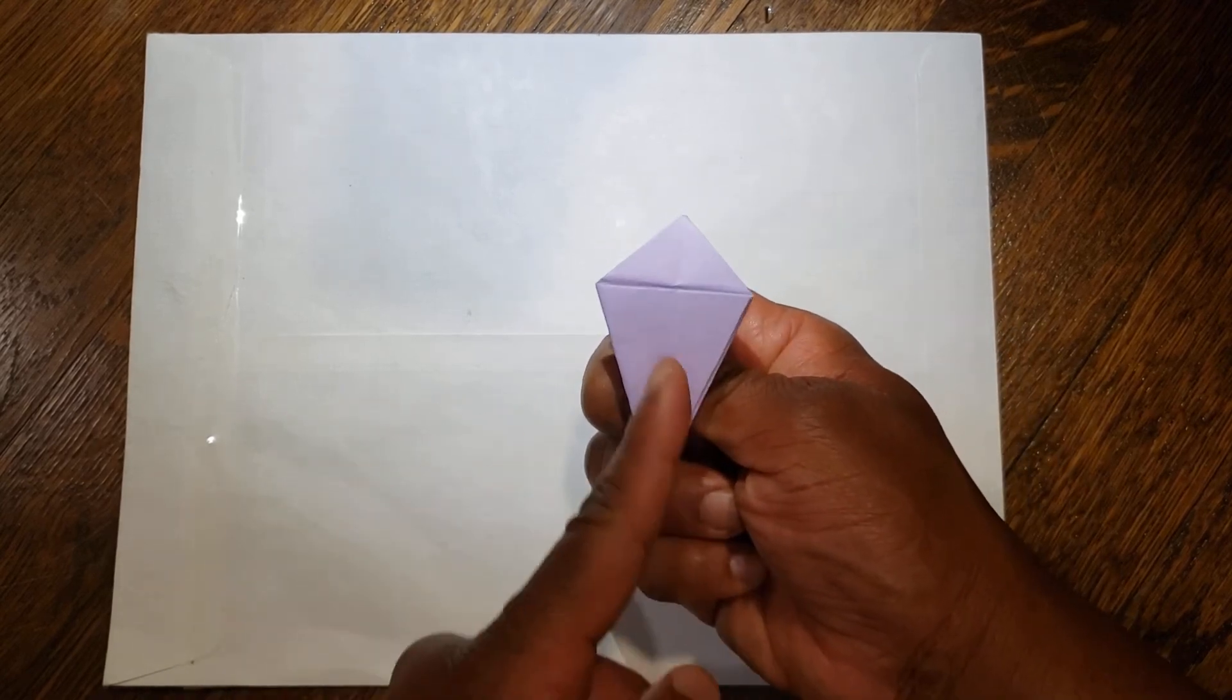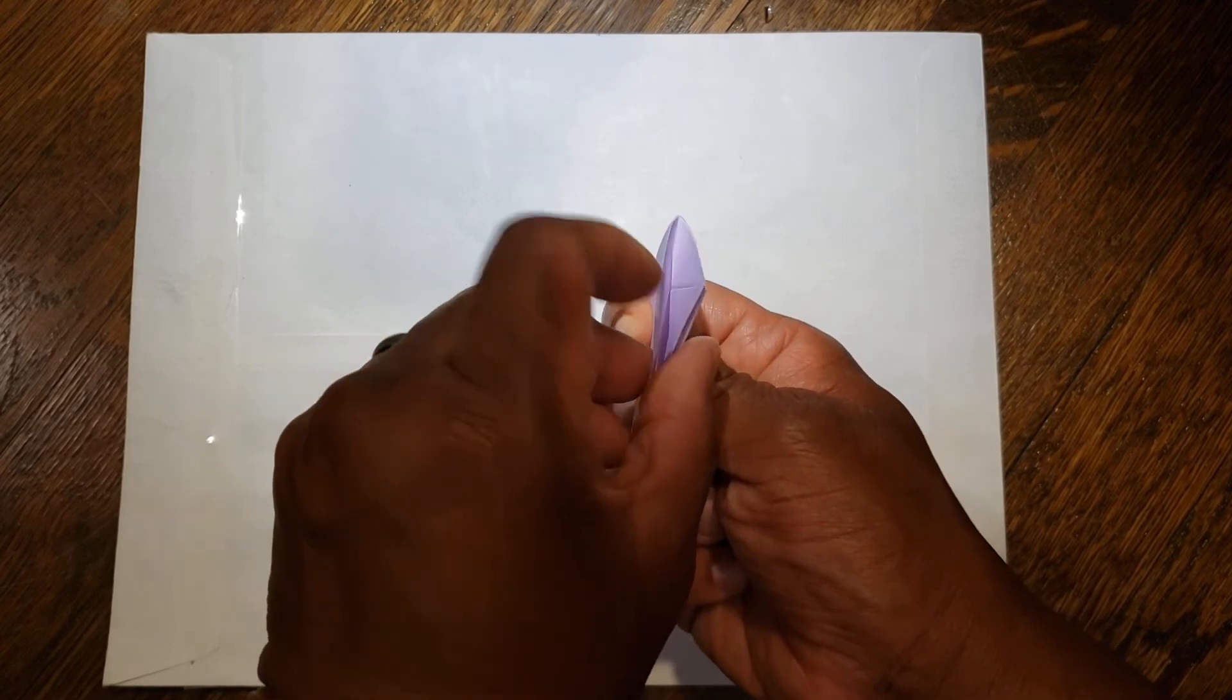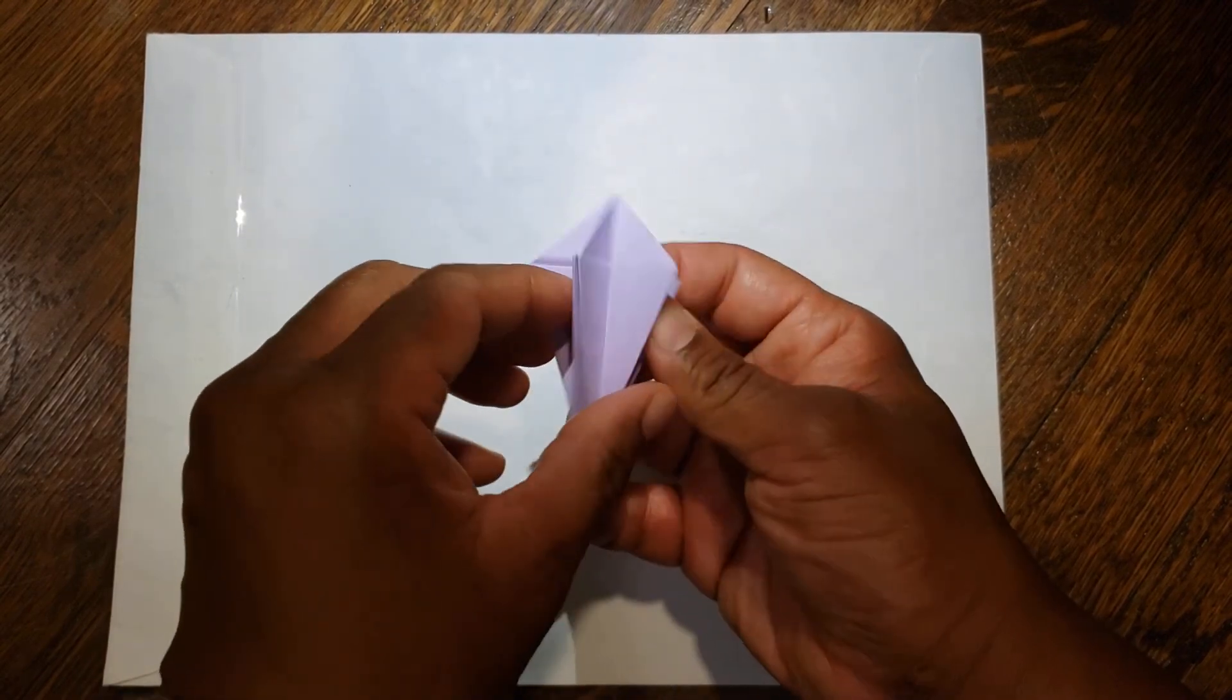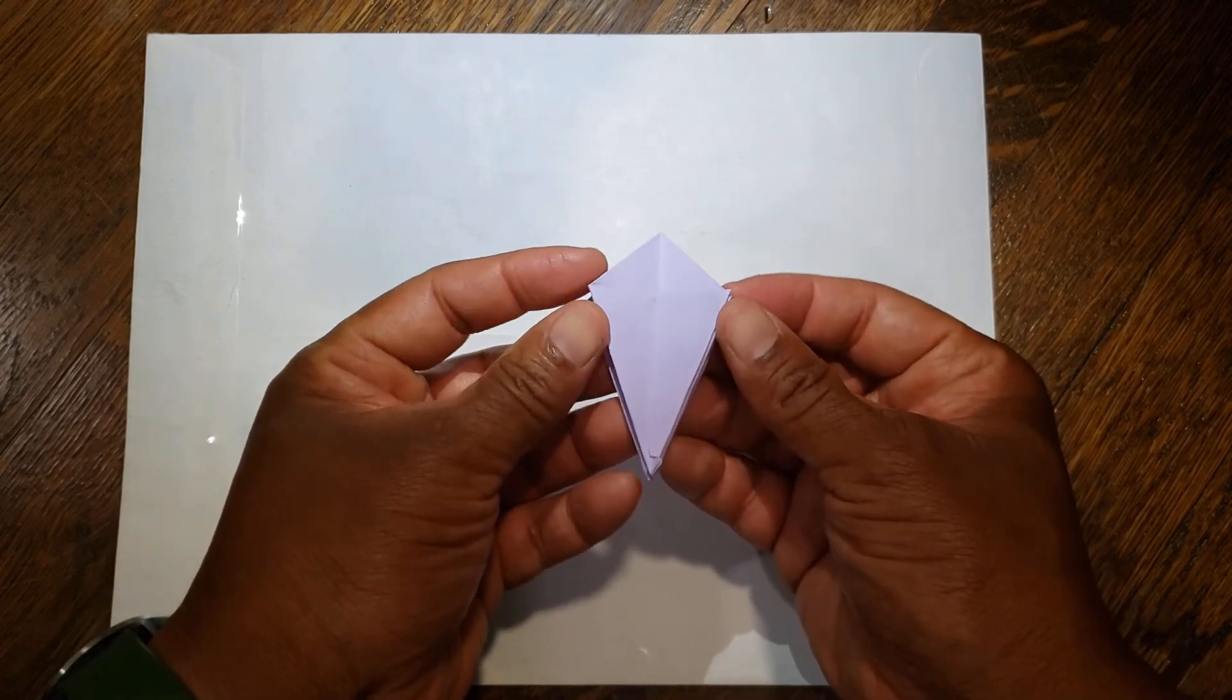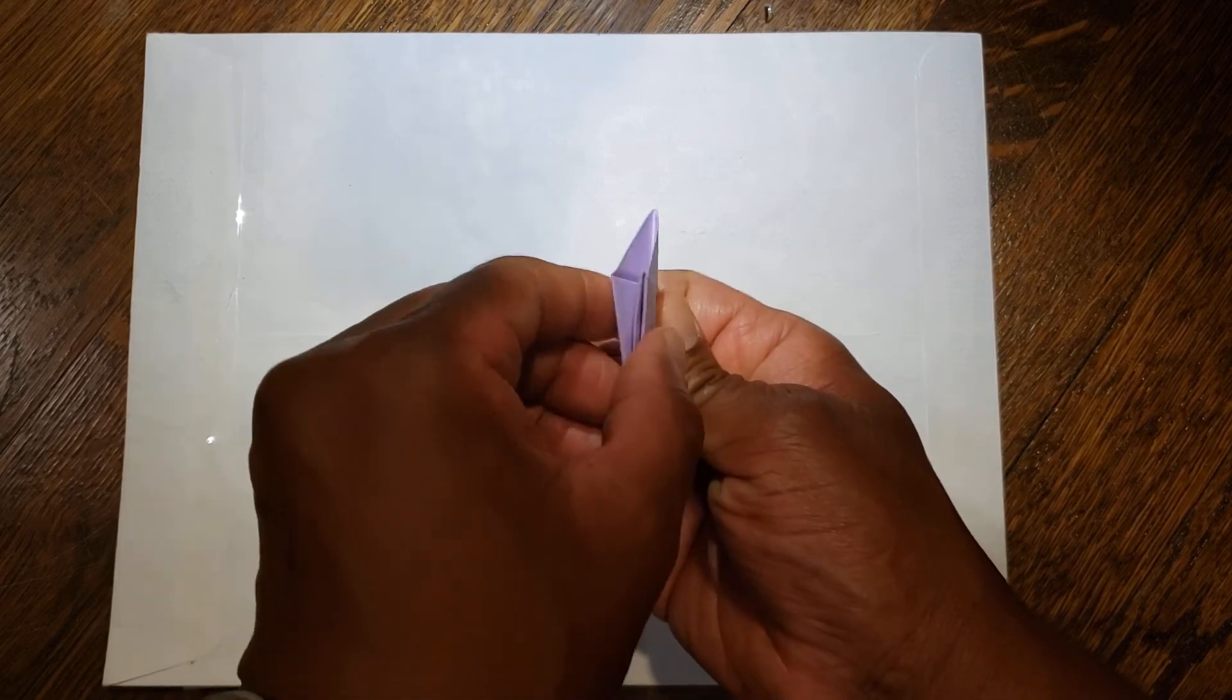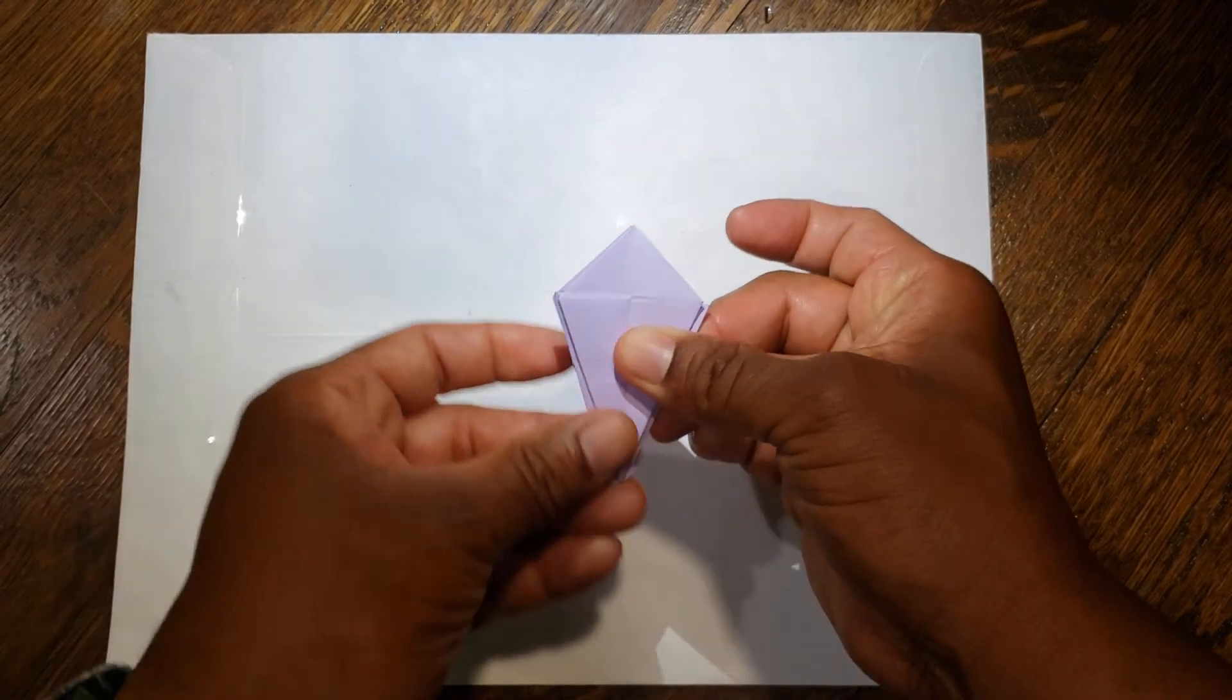Flip it over and the same thing. This line as our guide, we're going to fold it in half. Bring the left and right together on this side, flip it over and bring them left, right together on this side.